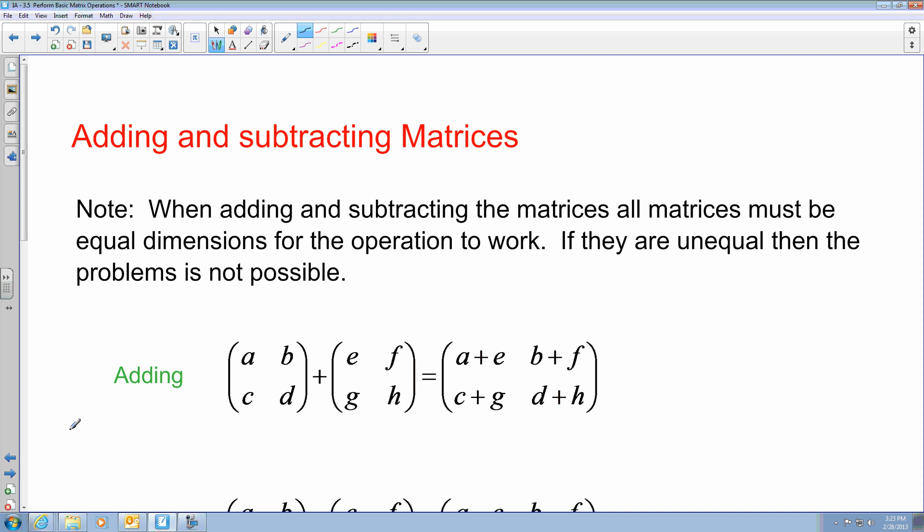One of the things for basic operations is being able to add and subtract matrices. When adding and subtracting matrices, it is important that all matrices must be equal dimensions for the operation to work. If they are unequal, then the problem is not possible. So if you have like these ones are 2 by 2 matrices, these are possible. But if I had a 2 by 2 plus a 2 by 3, it could not because these do not share the same dimensions.